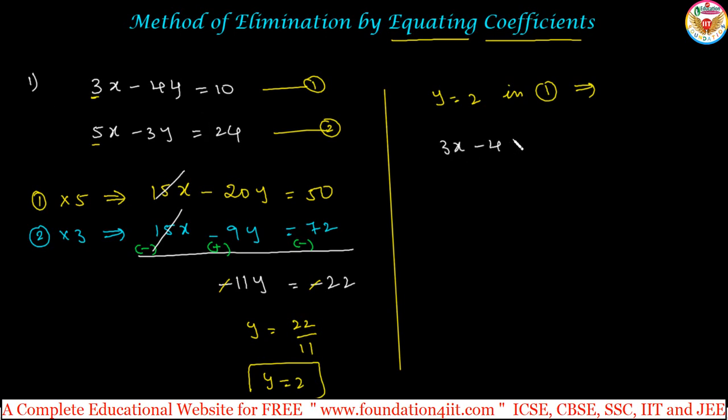So 3x minus 4y, y value is 2, right, is equals to 10. 3x minus 8 is equals to 10. Then 3x is 10 plus 8, 18. x is equals to 18 divided by 3, then x is 6.